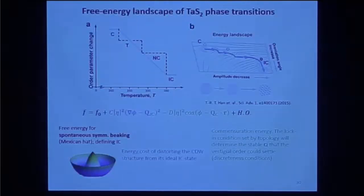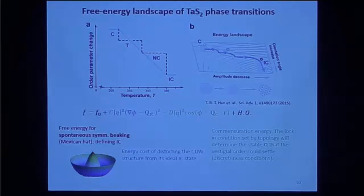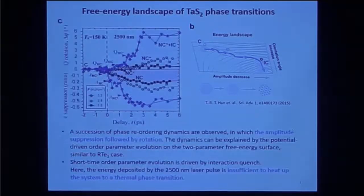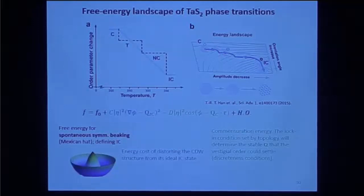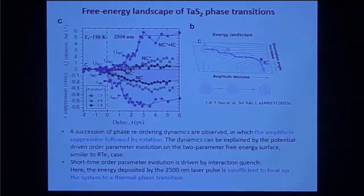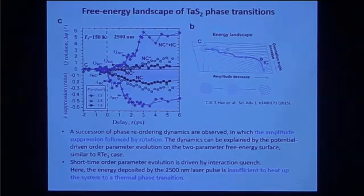We wrote a free energy landscape based on a modification of the Macmillan Landau-Ginzburg equation with experimental observables, which allows us to constrain the landscape. Based on that, we see an energy landscape with multiple minima. When you shine a laser, the system evolution first suppresses the amplitude — as seen in the previous system — then rotates into a new minimum, then suppresses and rotates again. The same kind of process is seen in experiment: suppress the order parameter, then rotate, suppress and rotate.